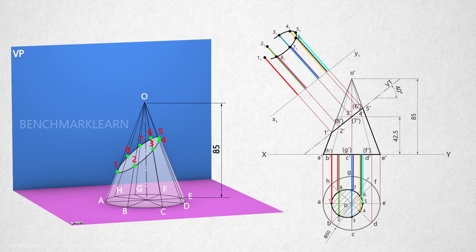Connect all these points and draw the hatching lines to form the sectional top view.